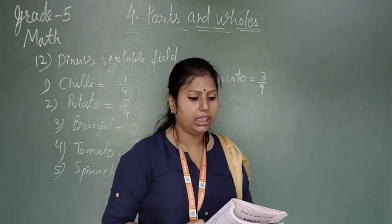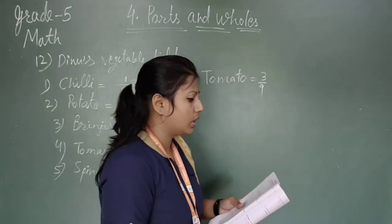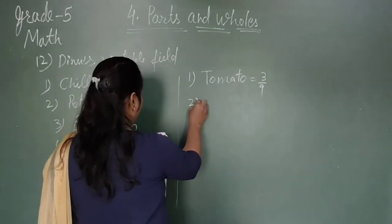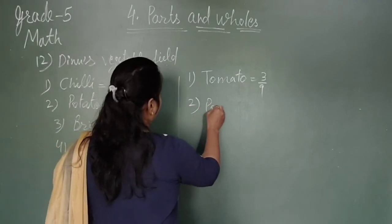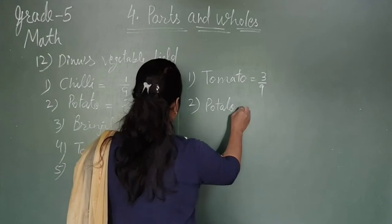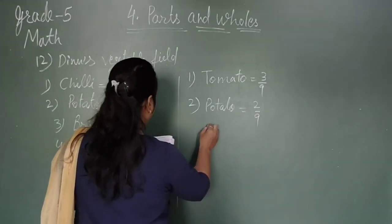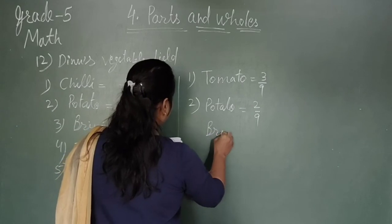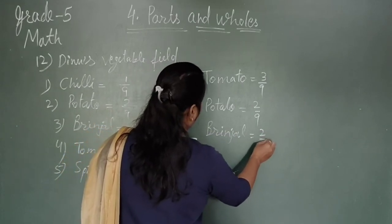Now question number 2: On what part of the field does he grow potato and brinjal? Potato is two upon nine, and brinjal is two upon nine.